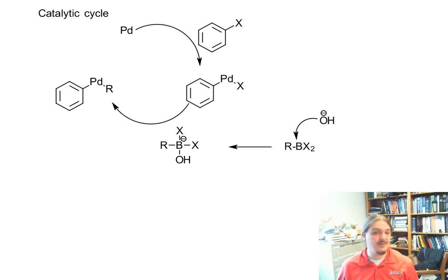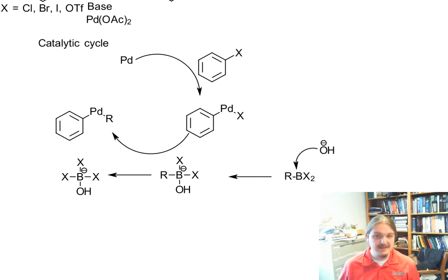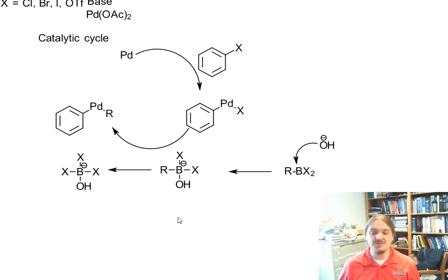So it kind of got the name transmetallation, even though it's not really a metal. And then while this is going on, we swap the R on boron for X. So palladium and boron are trading R for X. Whatever X is, X is usually something that forms a stronger bond to boron than it does to palladium.